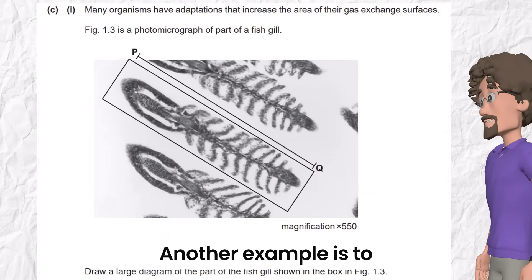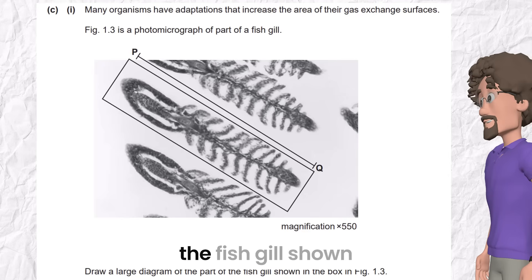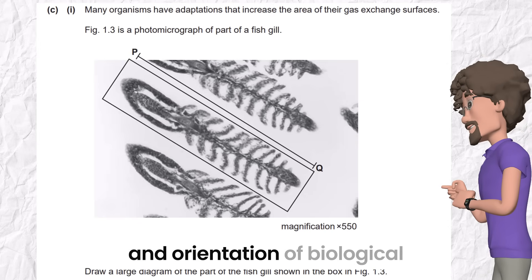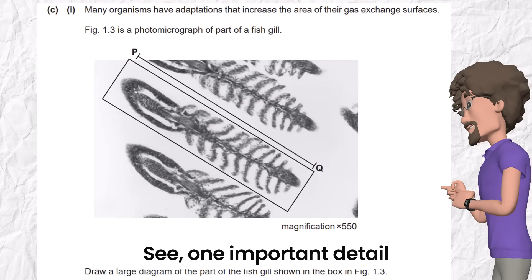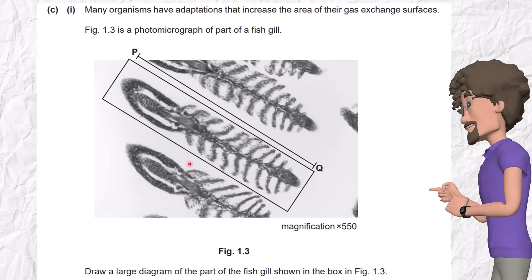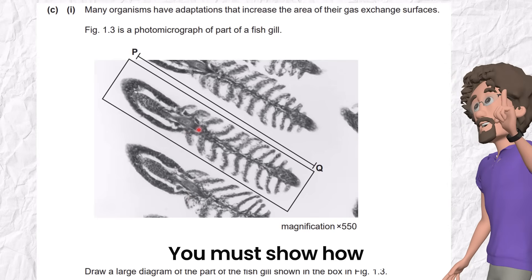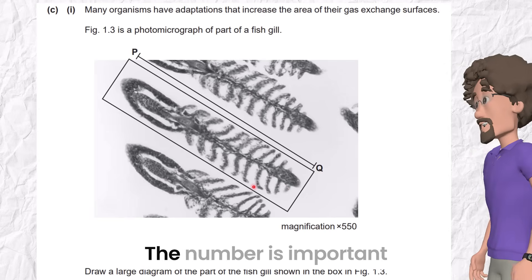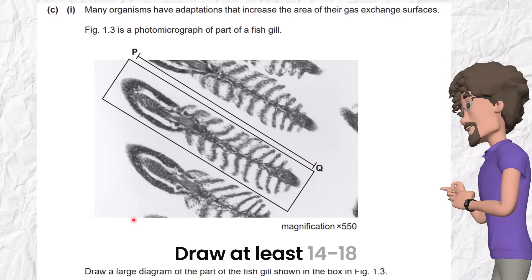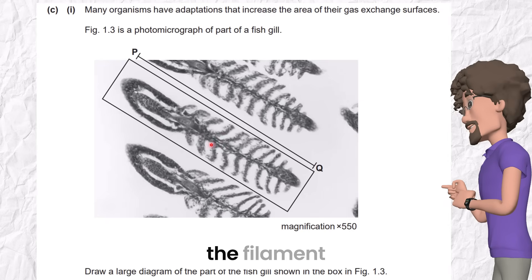Another example is to draw a large diagram of the part of the fish gill shown. It seems easy, but it's tricky. It tests your observation and orientation of biological realism. See? One important detail here is when you draw a big picture, you must keep an eye on proportion. You must show how the lamellae, branches, get shorter toward the end. The number is important. Draw at least 14 to 18 branches along the filament.